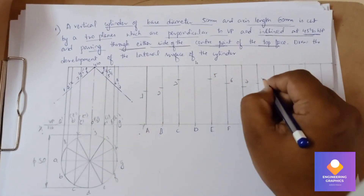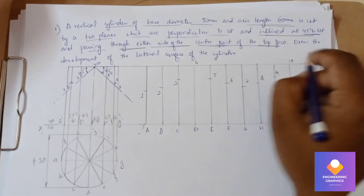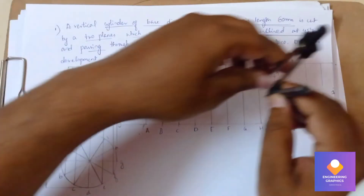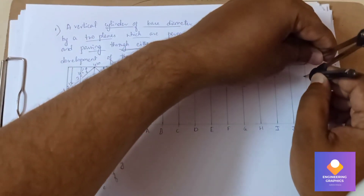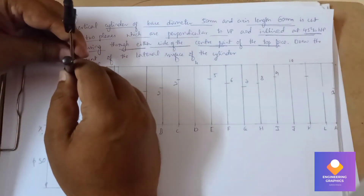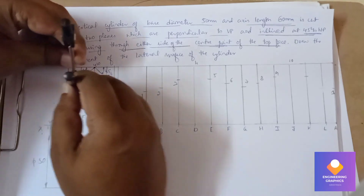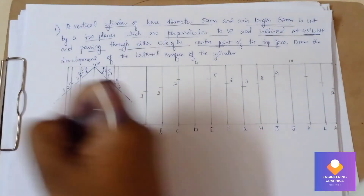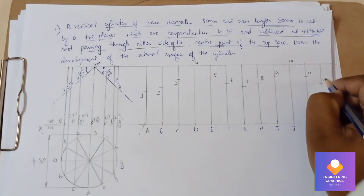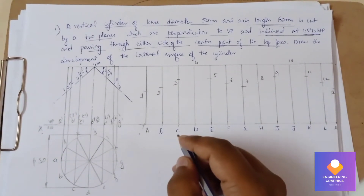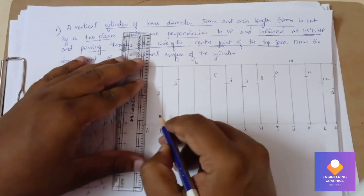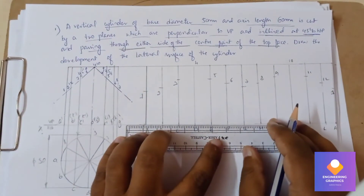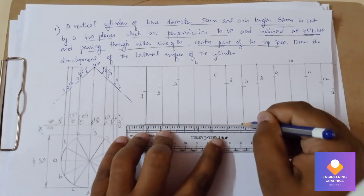Mention the naming. Now connect all the points 1, 2, 3, 4 with a curve — use a French curve to join them all.